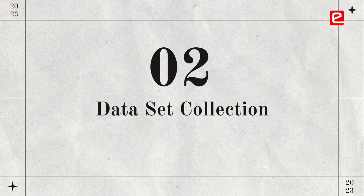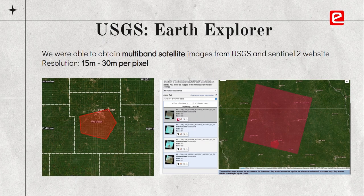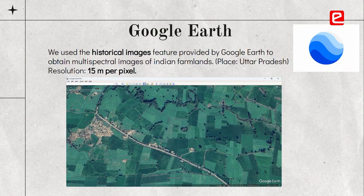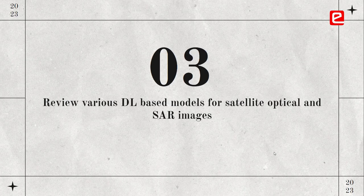We looked at datasets and were able to open multiband satellite images from USGS and the Sentinel-2 website. The resolution of these images was between 15 to 30 meters. The main advantage of Google Earth was that we were able to get historical images. After this, our next task was to review various deep learning based models for satellite optical and SAR images.